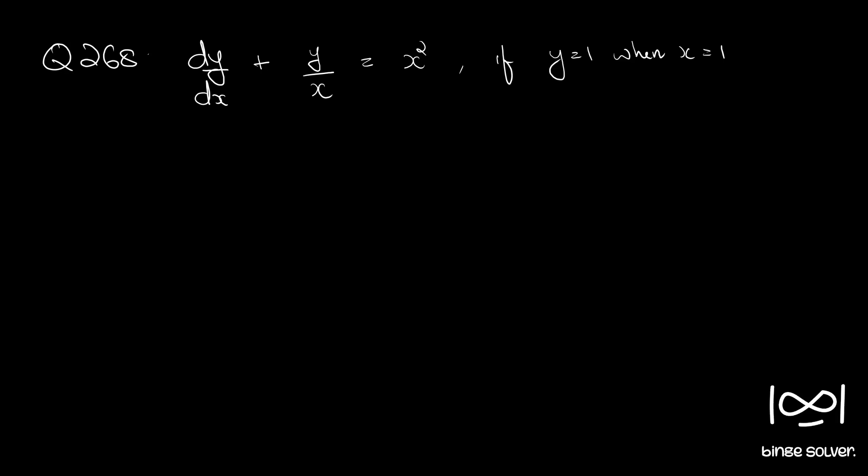Question number 268: dy by dx plus y by x is equal to x square, if y equal to 1 and x equal to 1.